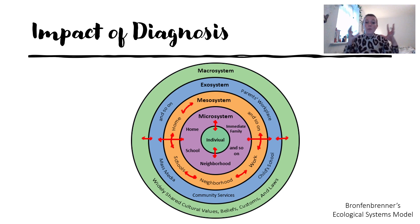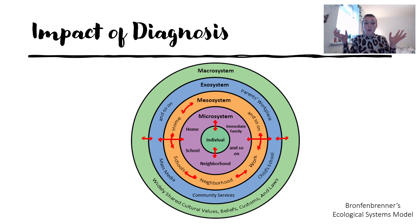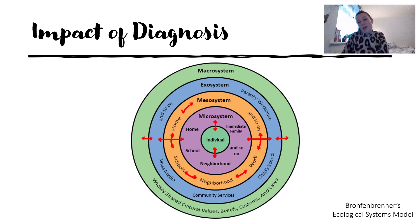Then we have the exosystem and macrosystem: mass media, community services, parents' workspace — and then the broadly shared cultural values, beliefs, customs, and laws. That's the model, and I want to use it to critique the impact of diagnosis.